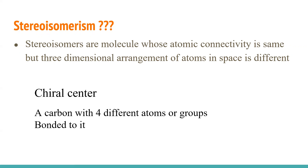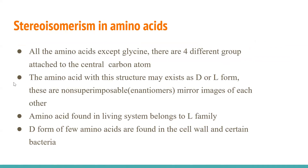Stereo isomers form at a chiral center. A chiral center is a carbon with four different atoms or groups bonded to it. All amino acids except glycine have four different groups attached to the central carbon, making them chiral.